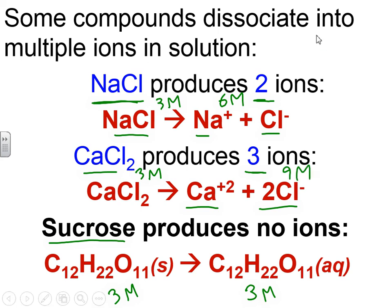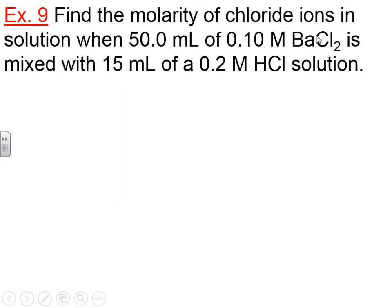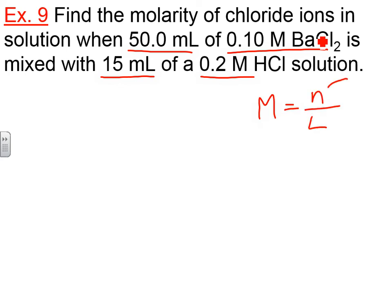Now let's do a problem: find the molarity of chloride ions in solution when 50 mL of 0.10 molar barium chloride is mixed with 15 mL of 0.2 molar hydrochloric acid solution. This is a mixing problem — the most difficult we've done so far. We need molarity, which is moles over liters. Since we have 50 mL of one solution and 15 mL of the other, our total volume is 65 mL, which is 0.065 liters.